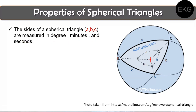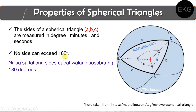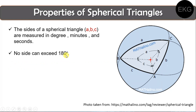For the next property: no side can exceed 180 degrees. Meaning sides a, b, and c, when we solve later, cannot exceed 180 degrees — they must be less than or equal to 180 degrees. The next property is that the three angles of a spherical triangle must together be more than 180 degrees and less than 540 degrees. So when we add angle A, B, and C, the sum must be greater than 180 but less than 540 — it cannot equal 180 or 540, since there is no equal sign in those bounds.